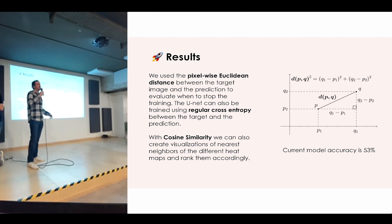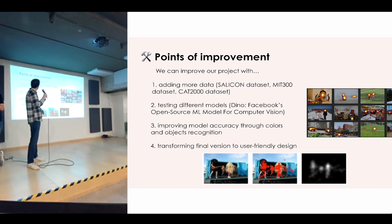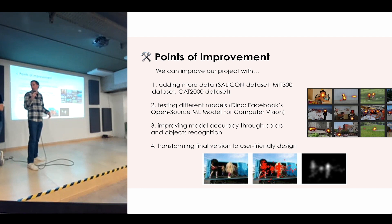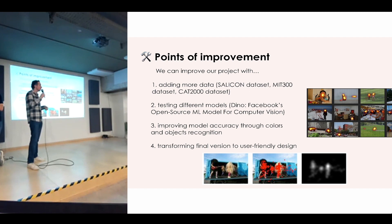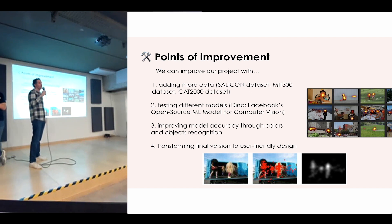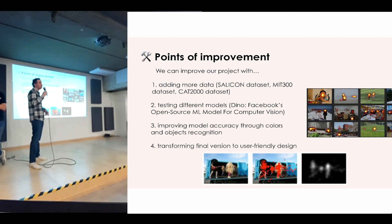We can see that some universities have achieved up to 80% accuracy with similar models, so that's something we aim to achieve. To improve accuracy, the first thing we'd like to do is get more data — there are other datasets from universities on Google that we could use and combine. We should also start normalizing inputs to the same size. The second thing would be to test different models — there is an open-source model from Facebook called DINO, which is also used for image segmentation and seems promising.